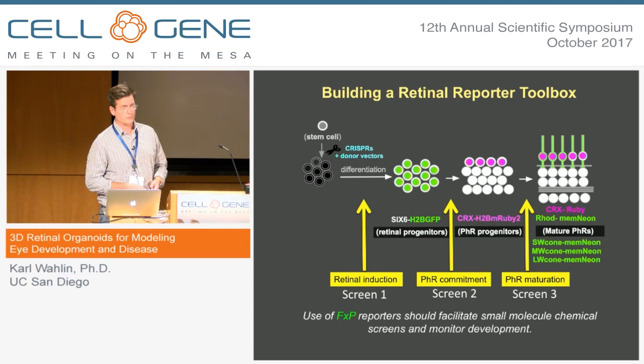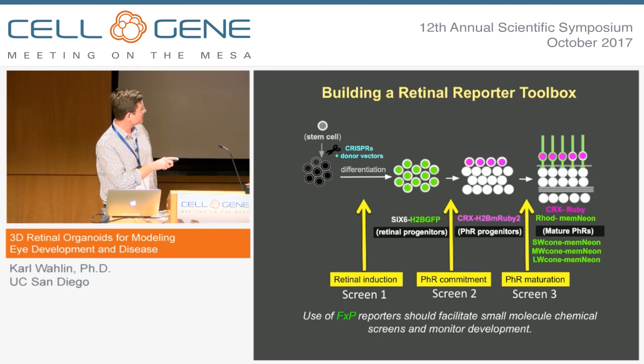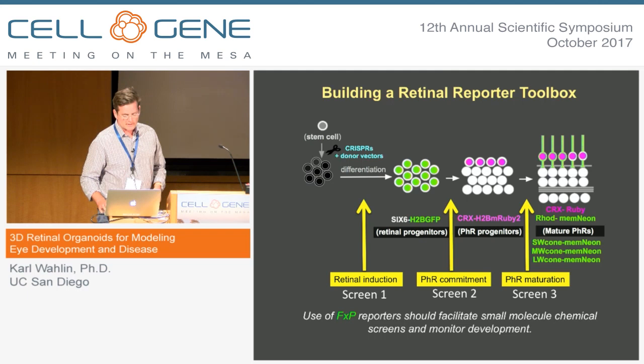This falls into the concept of developing a retinal reporter toolbox, where we can have different colored reporters at different stages in growth. We can have SIX6-positive cells at early stages, then another reporter called VSX slightly after that, then CRX for early-stage photoreceptors, and we're developing other reporters for late-stage maturation as well. We can optimize this process by doing small molecule screens at early, mid, or late stages, and this fluorescent reporter approach will help us hone in on some of the problems.